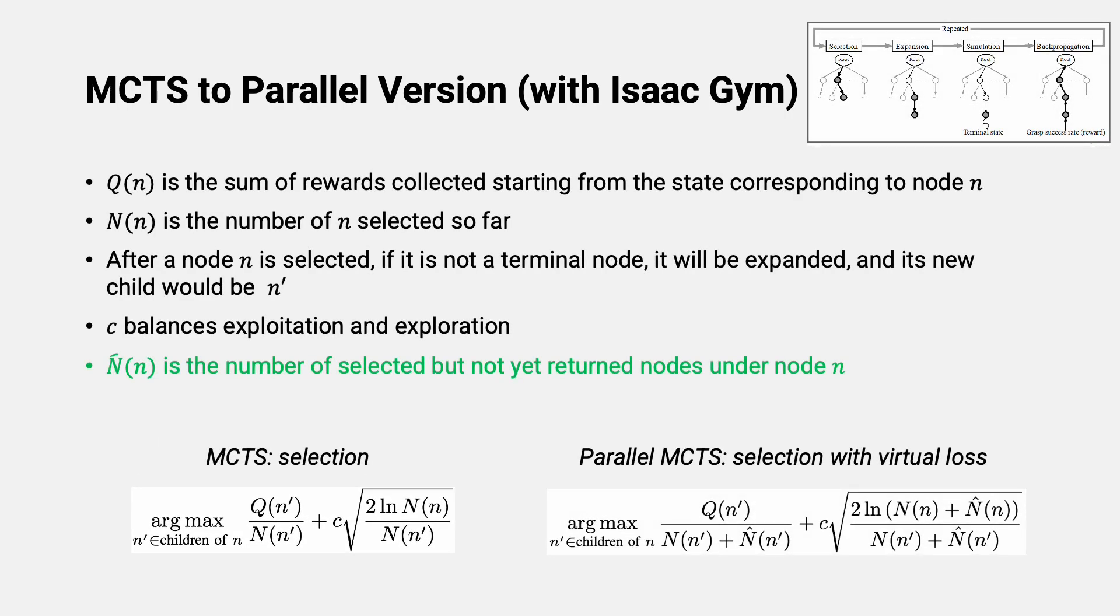We adopt a virtual loss approach to introduce parallelism into MCTS. In standard MCTS, Q, the sum of rewards, gets updated at the end of each iteration. The same applies to N, the number of iterations. To keep Q and N properly updated in parallel, a virtual loss can be introduced by assuming that no reward is obtained from all parallel iterations, achieved by only increasing the number of iterations but not increasing the reward.